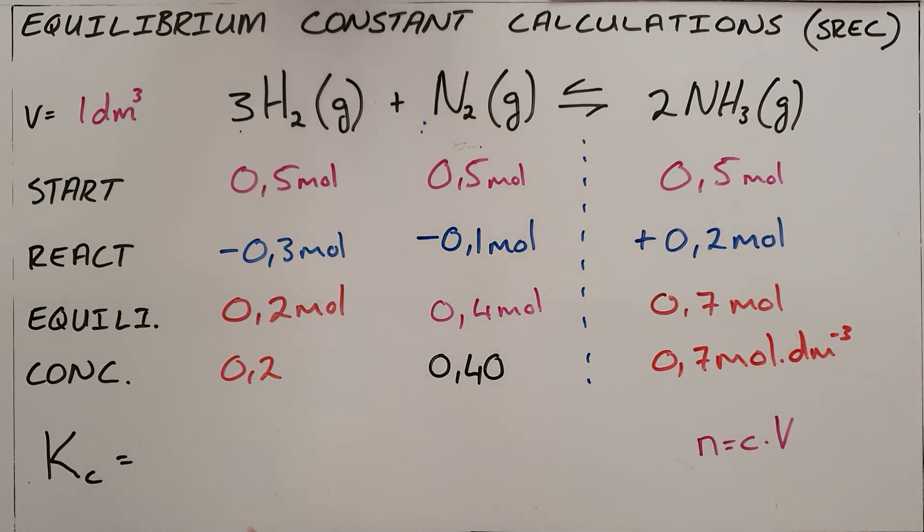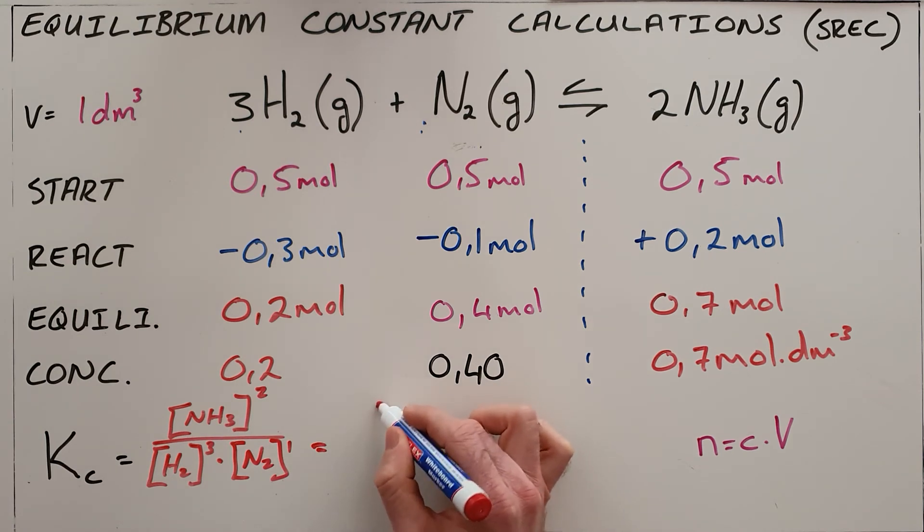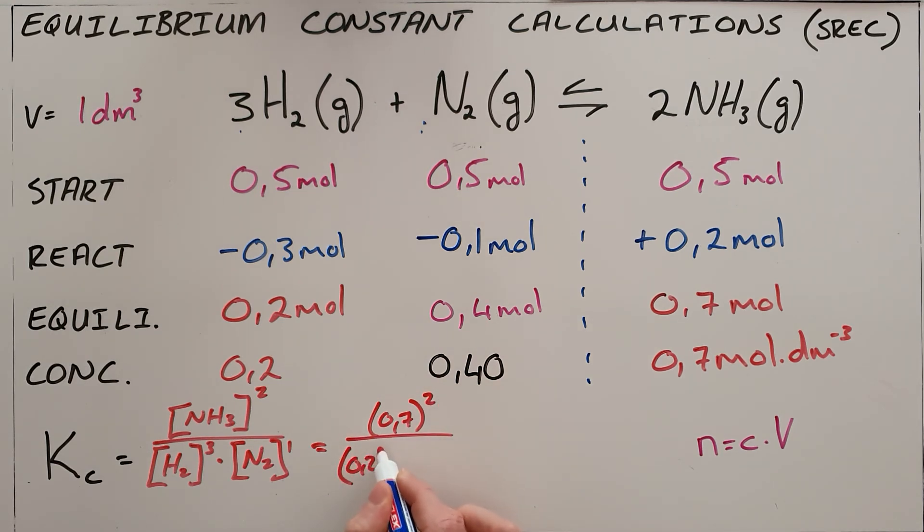So to calculate the equilibrium constant for this reaction, we know that it is the concentration of our products, in this case ammonia, to the power of its exponent, over the concentration of our reactants, hydrogen to the power of its coefficient and nitrogen also to the power of its coefficient, which means that our equilibrium constant can be calculated as follows.